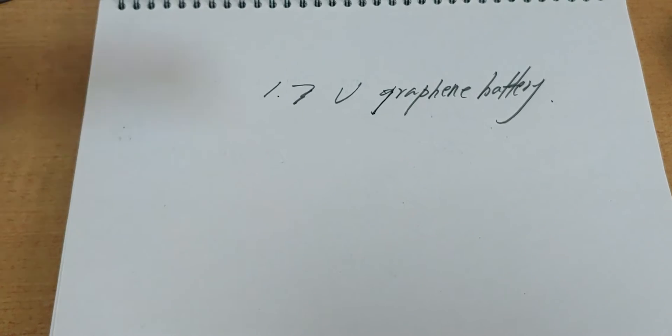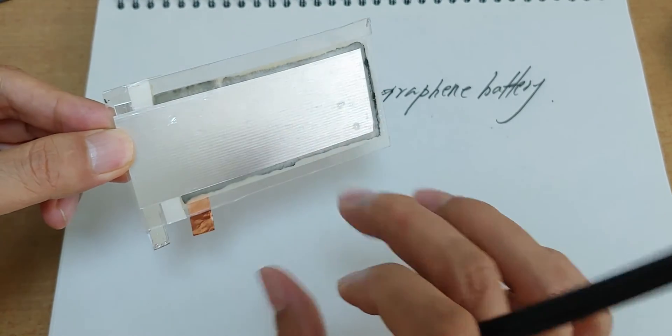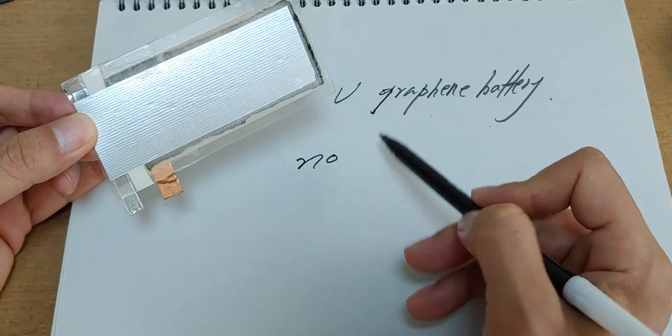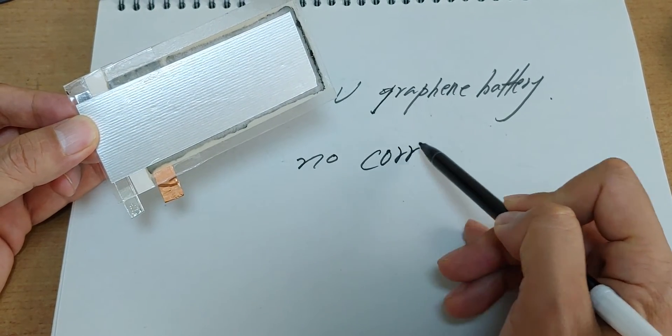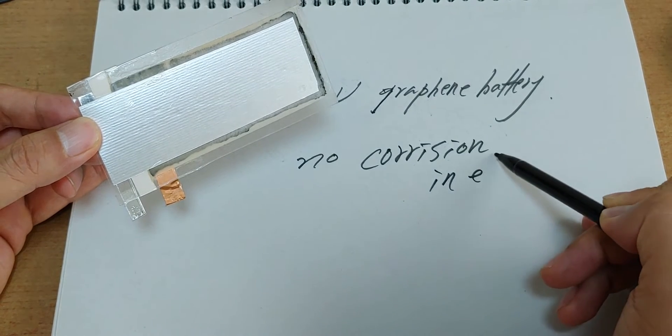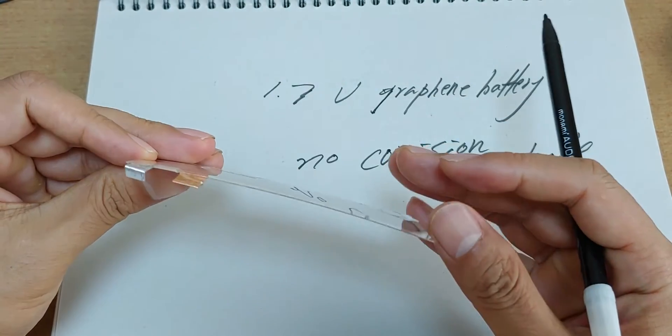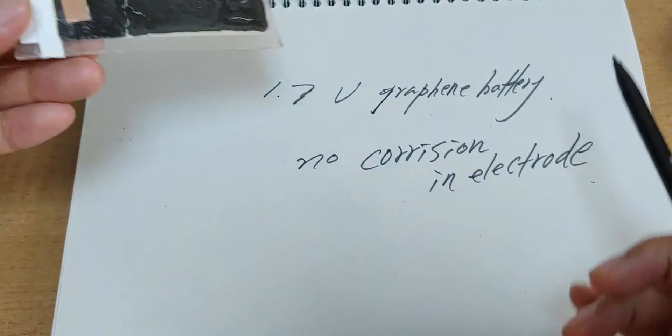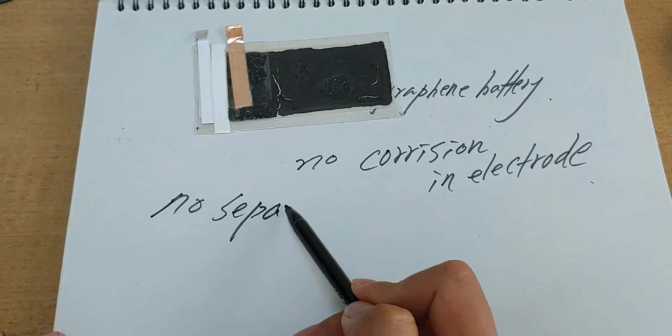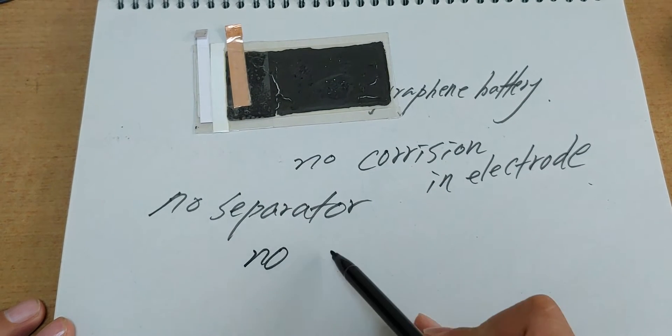I think this is a future battery because aluminum corrosion doesn't occur. No corrosion in electrode. Furthermore, no separator. No electrolyte.